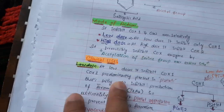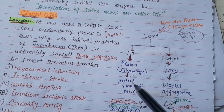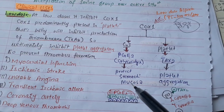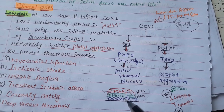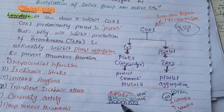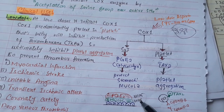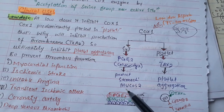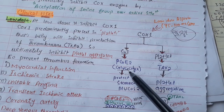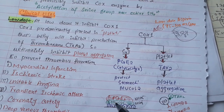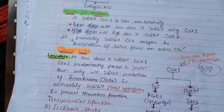Regarding side effects: COX-1 also produces prostaglandin E2, called glycocalyx, which protects the gastric mucosa. Gastric mucosal protection from acid is provided by mucus, prostaglandin E2 (glycocalyx), and bicarbonate. If you stop the production of glycocalyx, you are decreasing this protection, and that's why there will be gastric irritation.